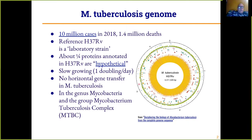There is other annotation but it's not incorporated into the standard reference for what the function of these genes is. It's a slow-growing bacteria — it only doubles once a day — and there's no horizontal gene transfer in tuberculosis. In fact, it seems to use the mechanism that would otherwise be used for horizontal gene transfer as part of its arsenal against the human immune system.